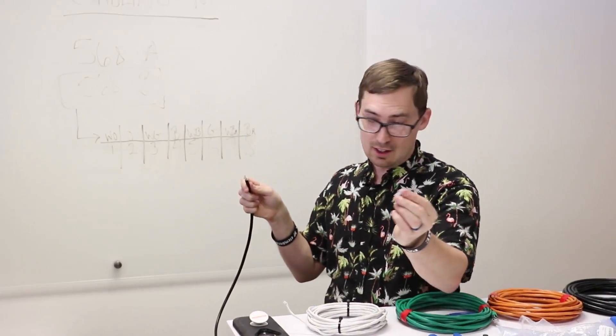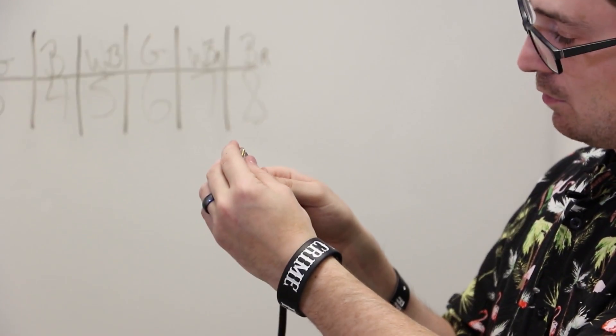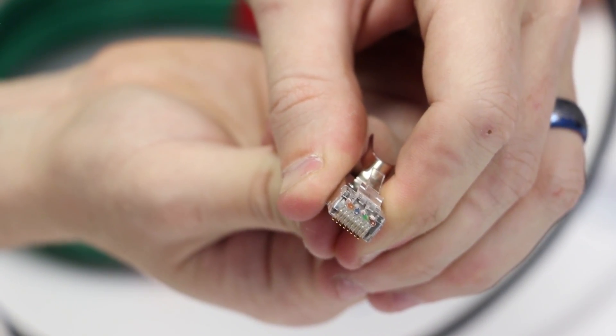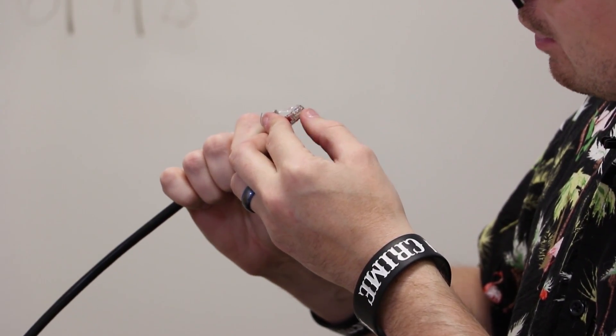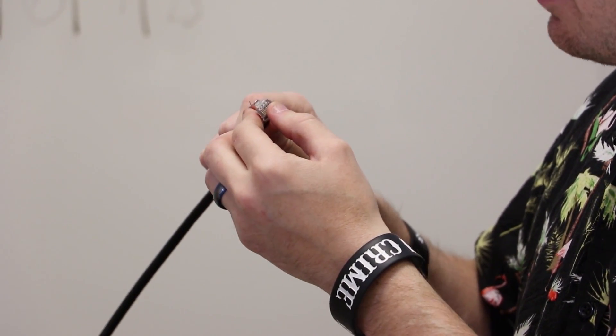I'm going to go ahead and slide this end on here. You need to look at the end of your cable here. You want to make sure that every piece of copper is at the very end of your cable before you crimp it down.